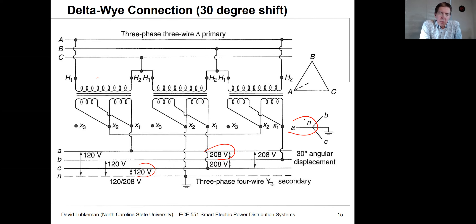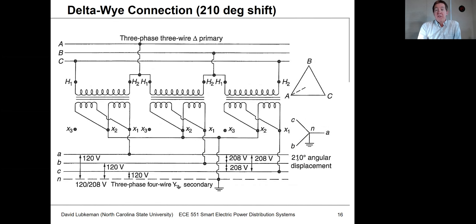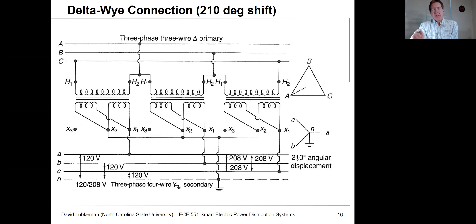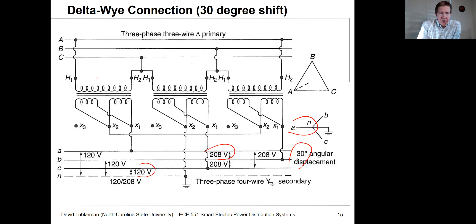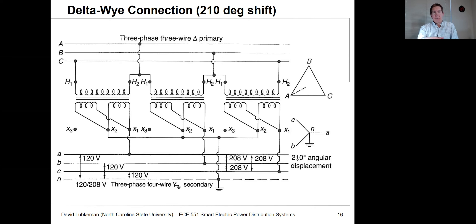This phase shift is not something we model or worry about if you just have a single transformer, but it becomes a problem if you have two transformers in parallel. One transformer might give a minus 30-degree phase shift, and another might give a 210-degree phase shift — making the two secondaries incompatible if you try to parallel them. You have to be very careful about how you connect these transformers up. The only apparent difference between two diagrams may be in how the primary is connected, and a simple wiring mistake would change the phase shift relationship.